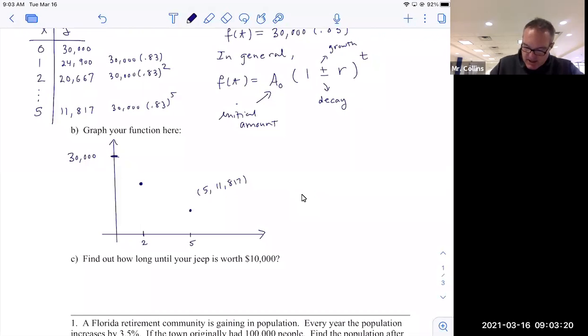And you could see what's going to happen, right? This is just a slow decay, right? And of course, theoretically, this approach is zero, although you'd sell your car long before that, right? Always that horizontal asymptote at Y equals zero, right?